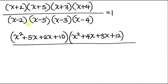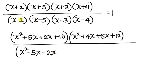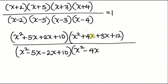Now let's multiply the denominator. We have x times x = x², plus x times -5 = -5x, plus -2 times x = -2x, plus -2 times -5 = +10. Then the other pair: x times x = x², plus x times -4 = -4x, plus -3 times x = -3x, plus -3 times -4 = +12.